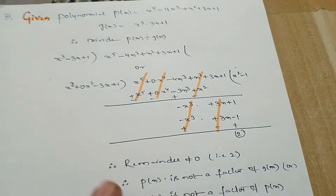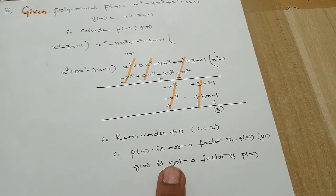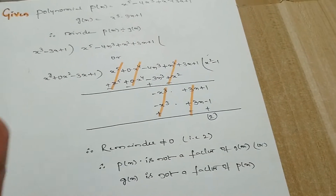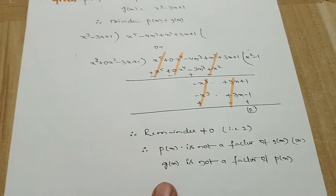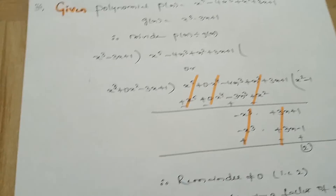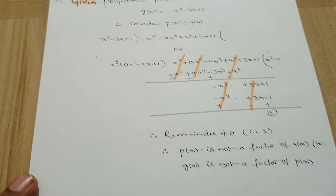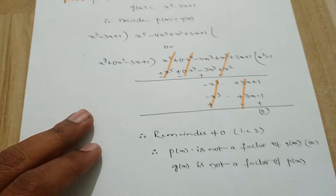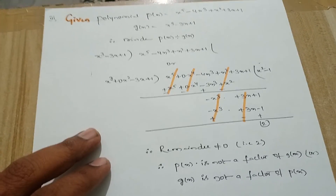Okay guys, when this type of sum is given in the exam, follow the same steps and write the conclusion statement also. If the remainder is 0, then it is a factor; if not, then it is not a factor. That step is important — you should write the answer. I hope you understood these three sums. In the next video I'm going to cover the next sum. Thank you for watching.